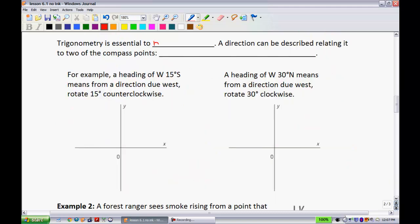Alright, trigonometry is essential to navigation. A direction can be described relating it to two points of the compass points. For instance, you could have north, south, west, and of course, east when you're dealing with a compass. So for example, a heading of west 15 degrees south means from a direction due west, rotate 15 degrees counterclockwise. So we would first go out west, so west is taking us out this way. And then from there, we're going to go 15 degrees south. So we go counterclockwise. So that means that this angle right here, we would say is 15 degrees. So that would be that direction.